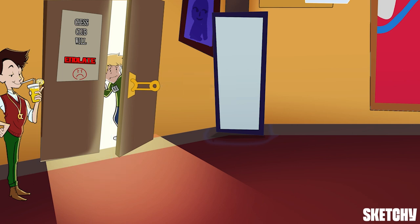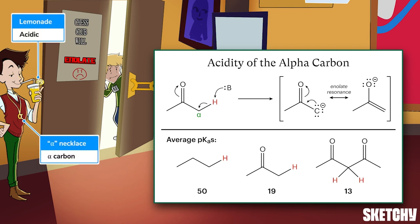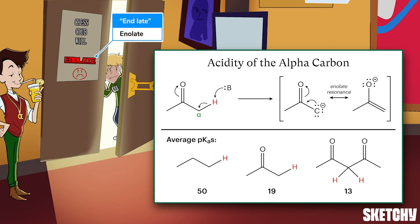Let's start with the most important feature of the alpha position of an aldehyde or ketone: its acidity. This chess club member is sporting an exclusive alpha gambits necklace while sipping a lemonade to remind you that the hydrogen atoms bonded to alpha carbons are way more acidic than typical carbon-bound hydrogens. We call these hydrogens alpha hydrogens, and they get their acidity from the fact that removing one of them results in formation of an oxygen anion called an enolate, which you can remember by the sign next to the door letting you know that tonight's chess club will end late.